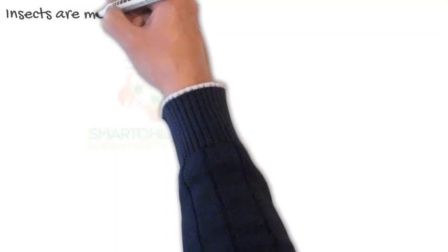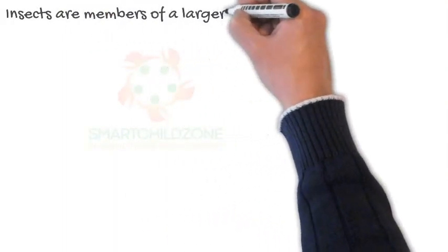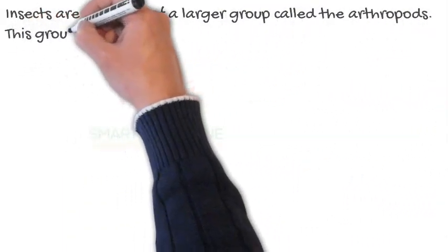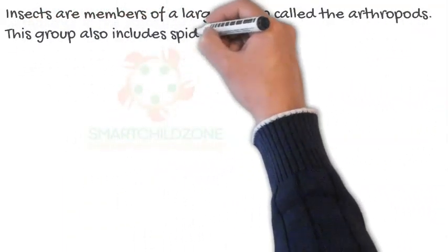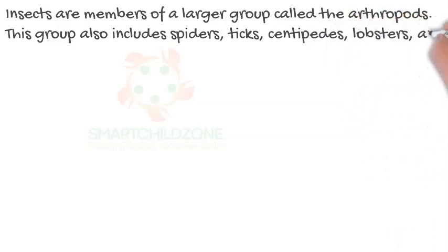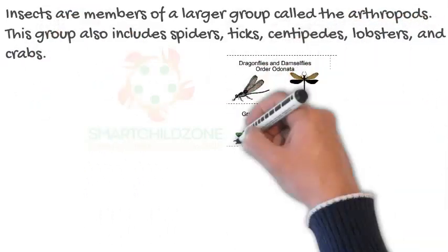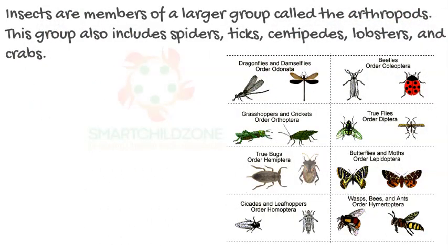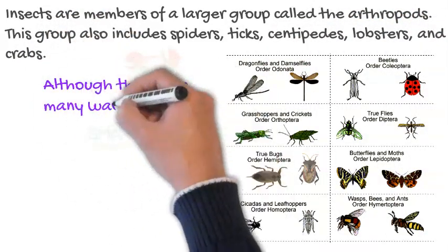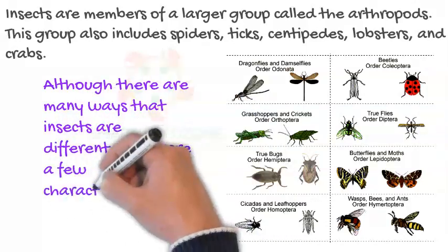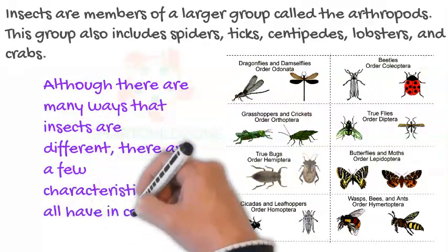Insects are members of a larger group called the arthropods. This group also includes spiders, ticks, centipedes, lobsters, and crabs. Although there are many ways that insects are different, there are a few characteristics they all have in common.